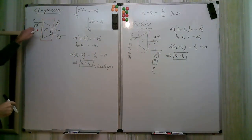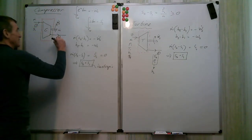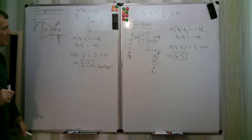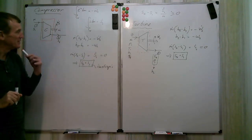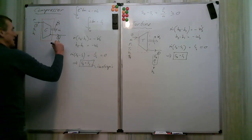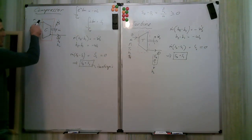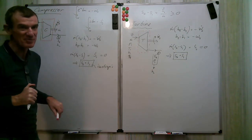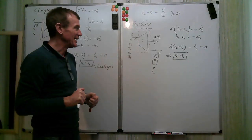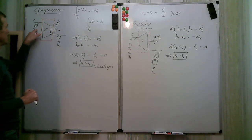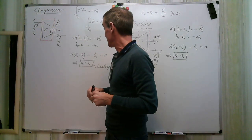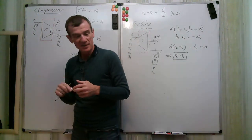For a compressor, knowing s1 and s2 are equal, together with a second property like exit pressure p2, allows us to find h2 from tables and then compute the work per unit mass. Generally we know inlet conditions and some exit condition such as pressure or temperature, and the isentropic assumption closes the problem.